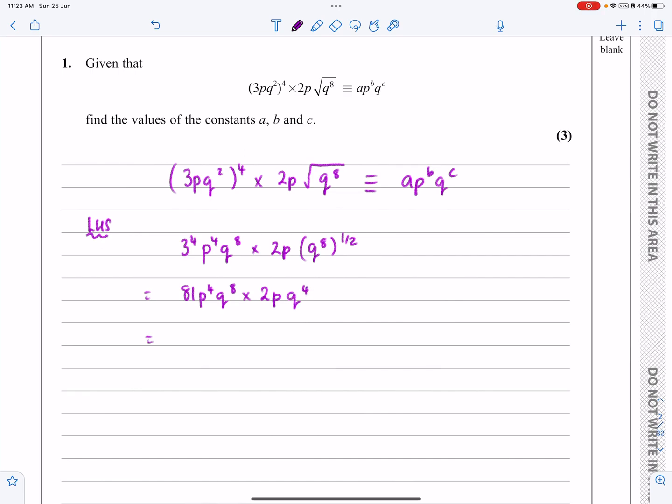Which then works out to be, right, the numbers multiply: 81 by 2 is 162. I've got p⁴ times p, so that's p⁵. I've got q⁸ times q⁴, so that's q¹².